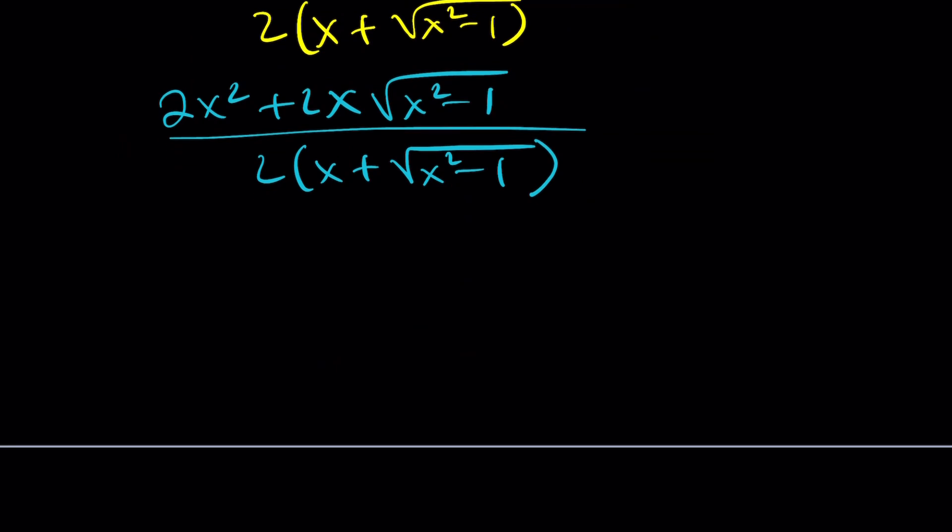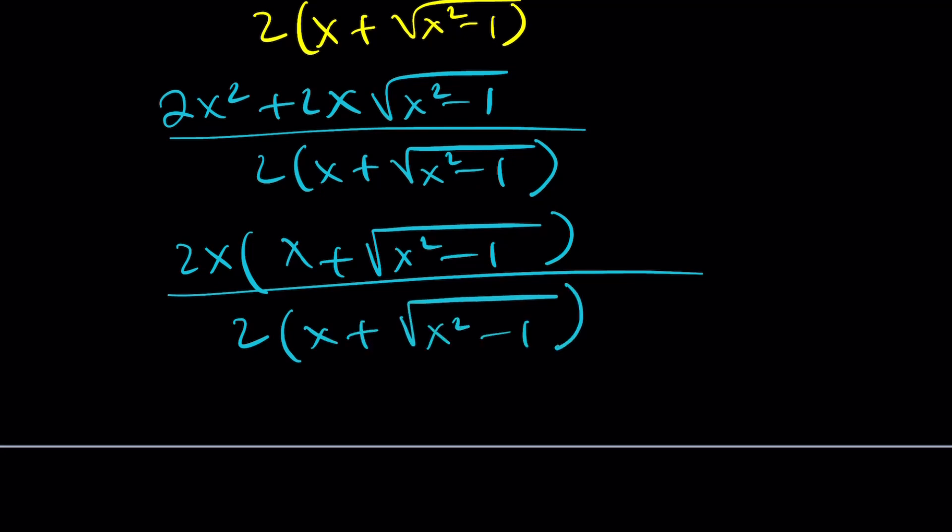And then now we're going to do the following. Factor out of 2x, and then we get x plus the square root of x squared minus 1 divided by 2 times x plus the square root of x squared minus 1. Do you see what I see? These two are going to cancel out. Two's are going to cancel out, and we're going to end up with x.